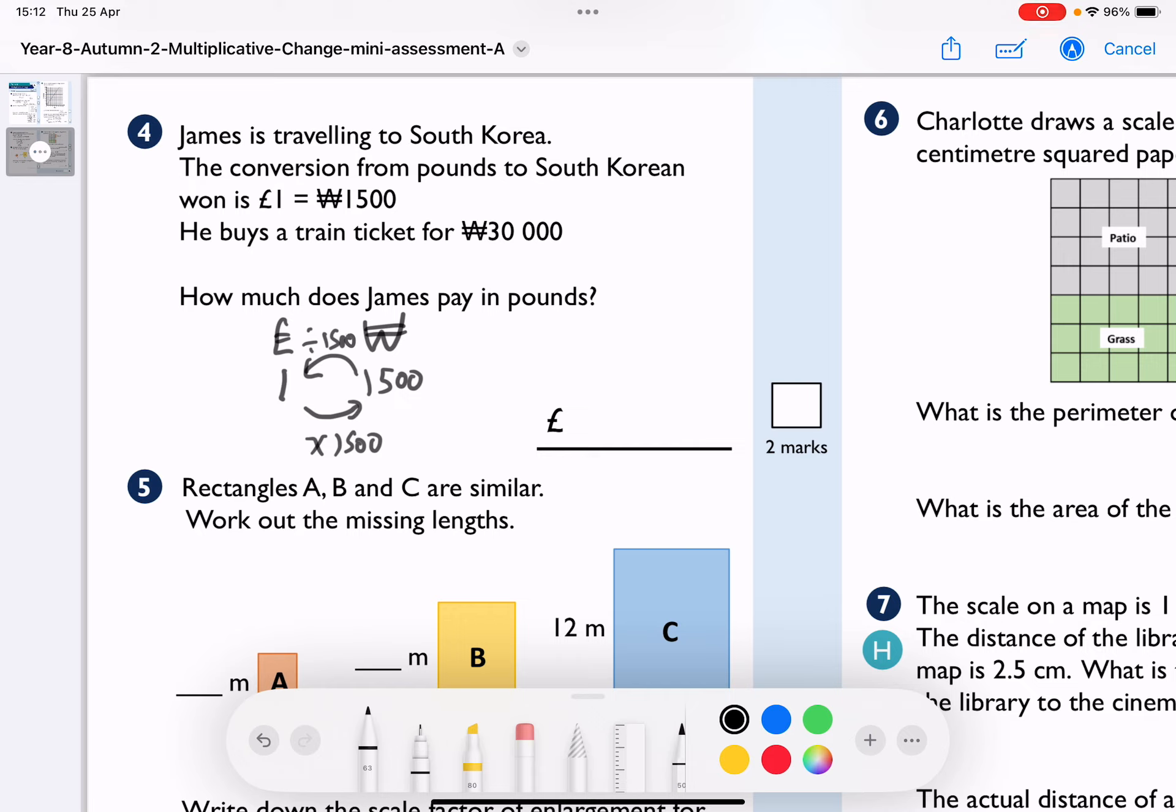So in this case, he buys a train ticket for ₩30,000. So I want to get back to pounds, so I'm dividing by 1,500. So 30,000 divided by 1,500.